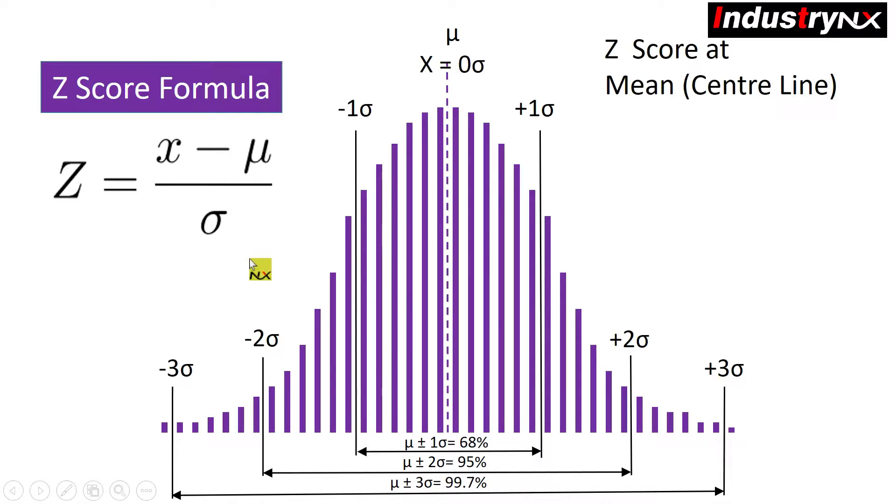Let us find z-score at mean where x is equal to mu. Therefore z-score value is always coming at 0 at center line of the bell-shaped curve. In our case it is 10.000 minus 10.000 divided by sigma which equals to 0.